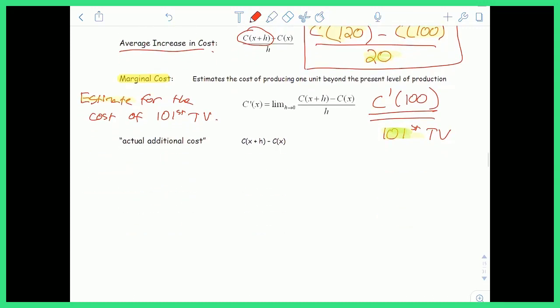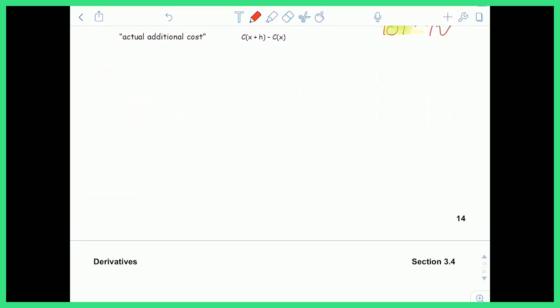It's notable to add that you can calculate the actual cost of that 101st television. All you have to do is take the cost of x plus h, which is basically the 100 televisions that we had plus one more television, and subtract the cost of producing the original 100 televisions. So C of 101 minus C of 100